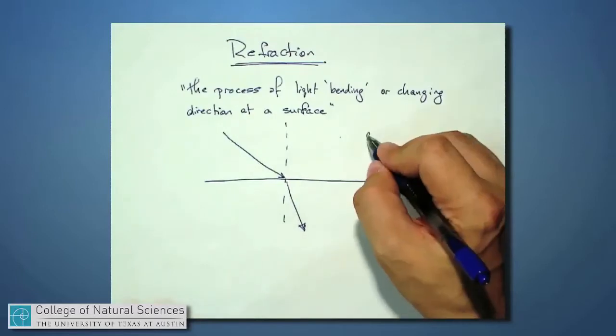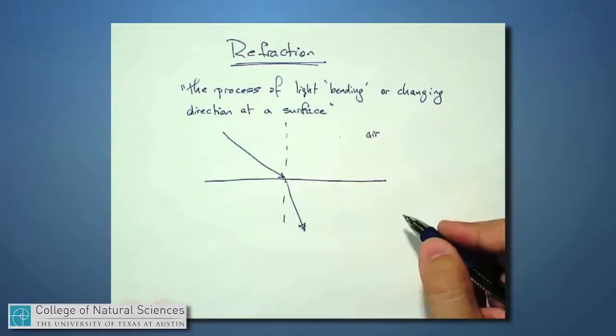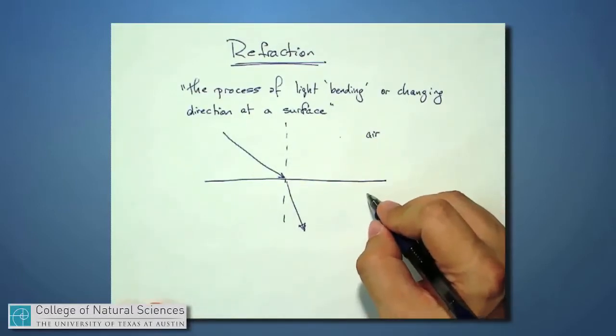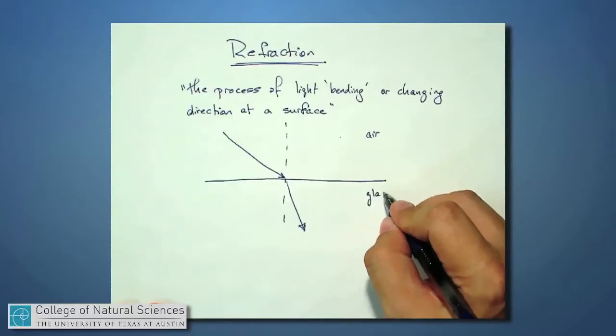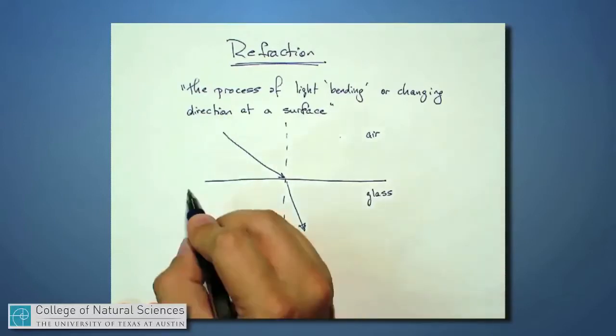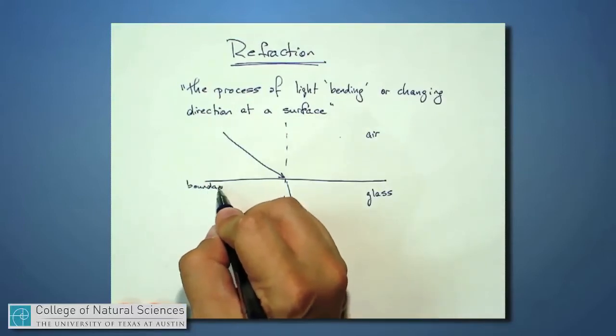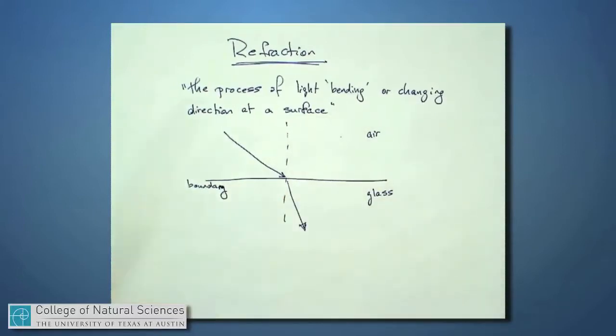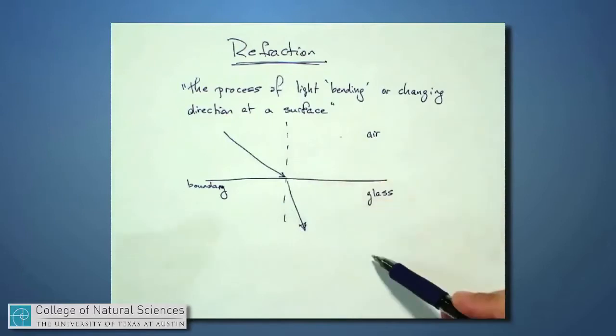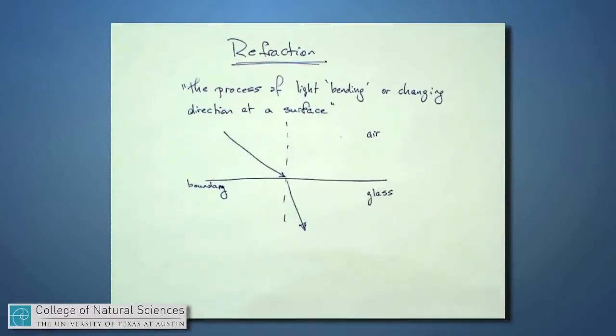If I were starting out in a medium like air and sending light into a medium like glass, and this line right here represents the boundary, light does a funny thing at this boundary. As we've noticed before, the light does not just transmit directly through the glass at the same angle as it was incident. In fact, the light changes direction.